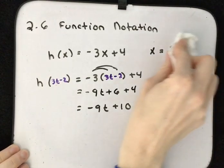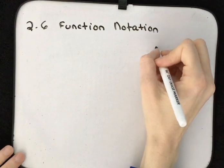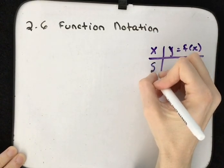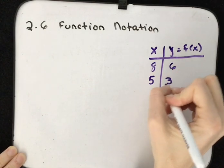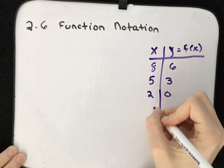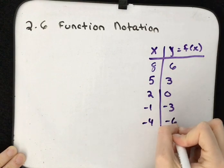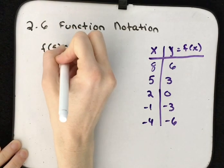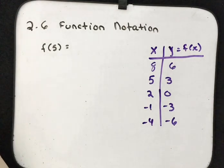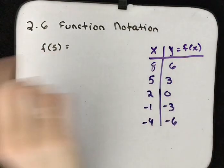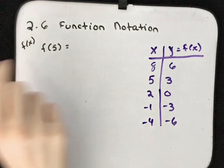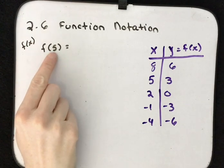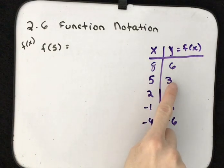Let's look at one given to us in a table. We are asked for f of 5, which means find the value when x is 5. Normally we have f of x, but here we have f of 5, so we want to know the value when x is replaced with 5. Finding x equals 5 in the table, our value is going to be 3.